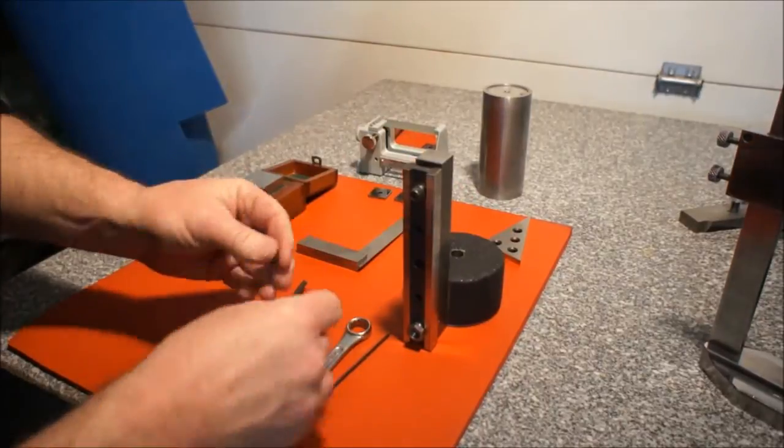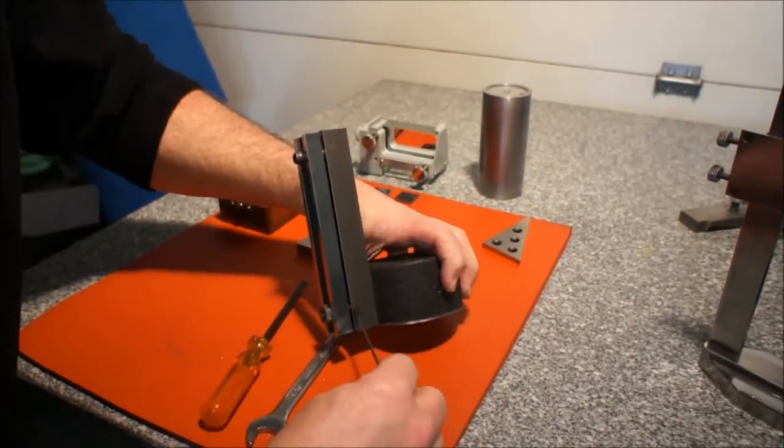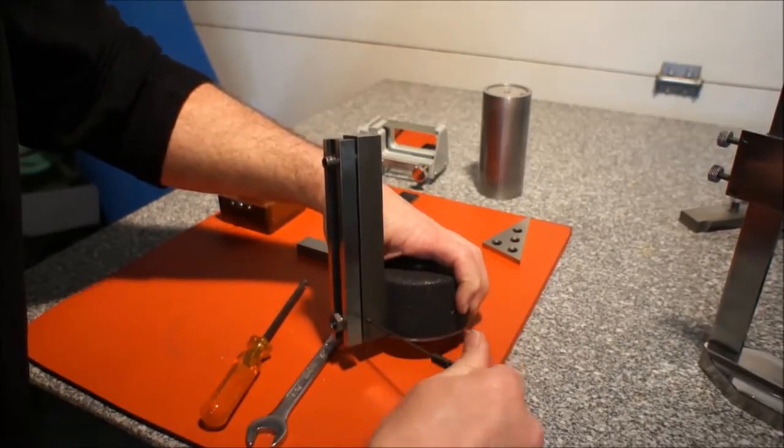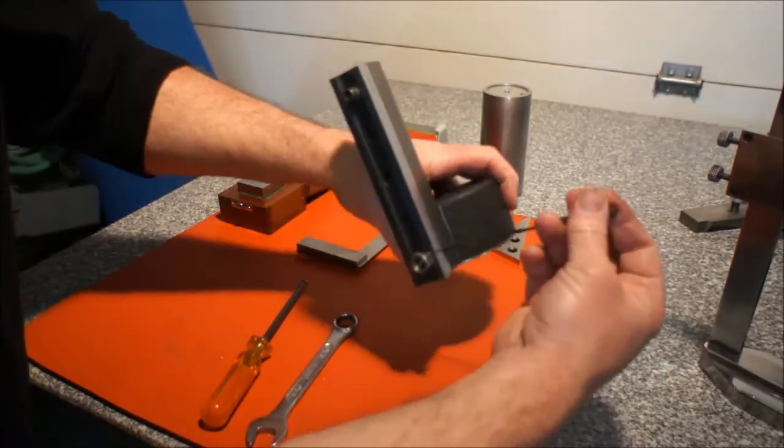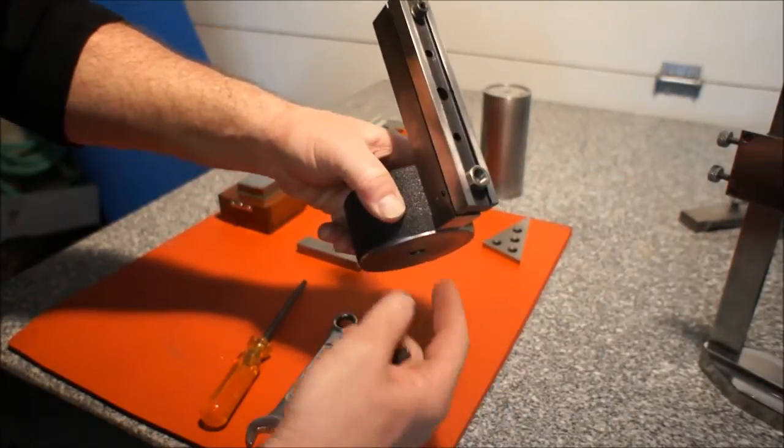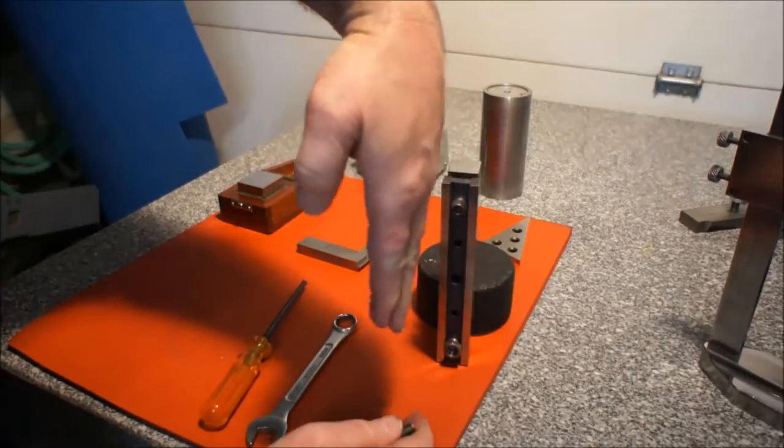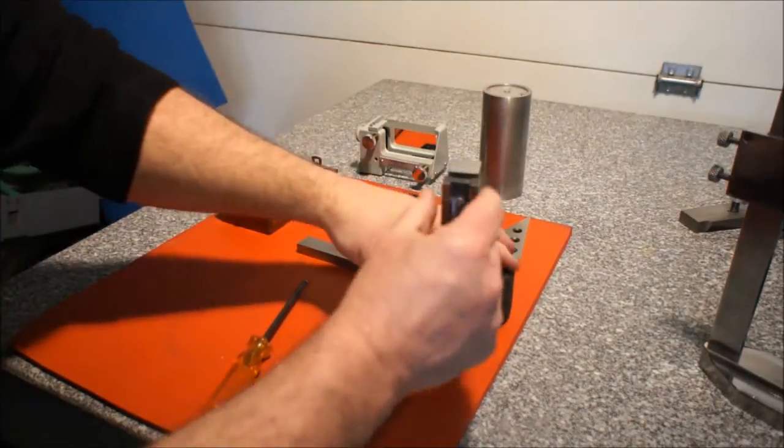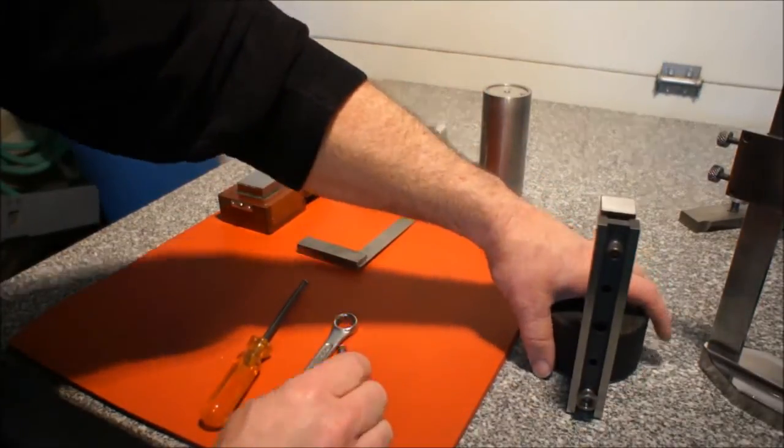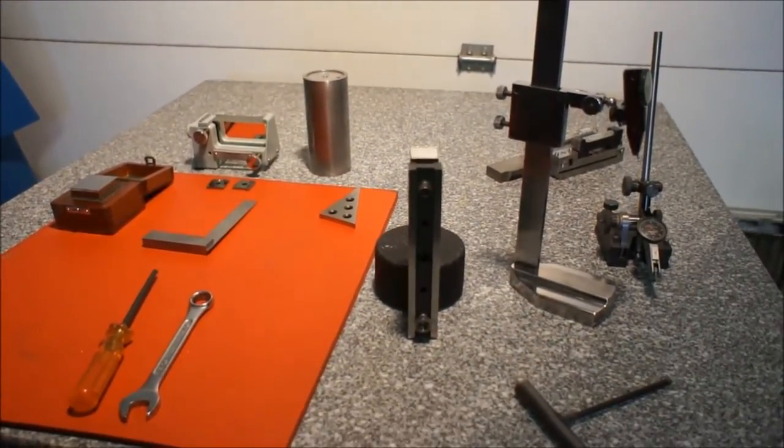So, as you can see, two set screws. They each drive in opposing each other and ride against the pin that projects down through. So what that allows is I can adjust the squareness of this parallel to my surface plate. And I'll do that using the squareness checker.